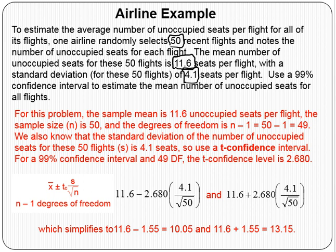Since the standard deviation is for the 50 sample flights rather than all flights, that makes this a t-confidence interval. We're asked to use a 99% confidence interval to estimate the mean number of unoccupied seats on all flights. With a sample size of 50, the degrees of freedom is n minus 1, which is 50 minus 1, equaling 49 degrees of freedom. That's the t-curve we're using, and s equals 4.1.